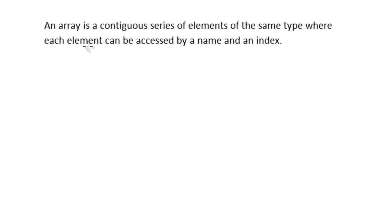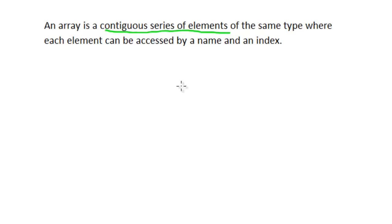An array is a contiguous series of elements of the same type, where each element can be accessed by a name and an index. Let's look at each part of this definition and get a visual idea of what's going on. When we say element, we just mean a cell — a box.